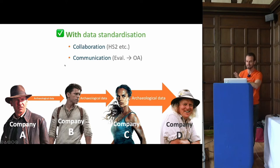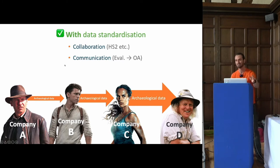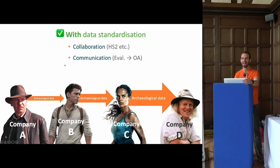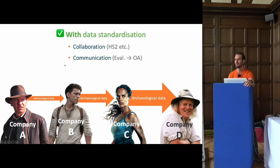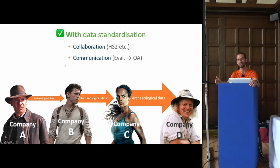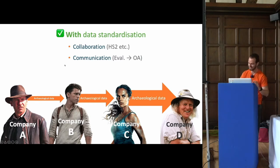Standardization also benefits communication. Everyone here will have been working in a company where you've been doing an open area site and inherited it from a different company who was doing the trenching evaluation. If all the data from that evaluation was in the same format you use, it would make everything easier. A friend of mine who's a supervisor once spent several weeks on a Roman open area site not really finding many finds, until they got a significant small find at the bottom of a Roman pit — which was a 2008 prescription bottle. That was when they realized the area had already been archaeologically excavated by a different company. With standardized, easily accessible data, these kind of time vampires just wouldn't happen.